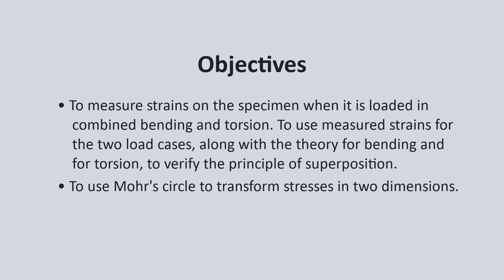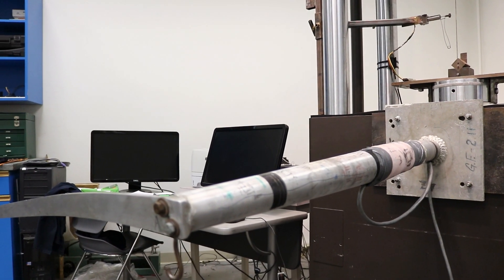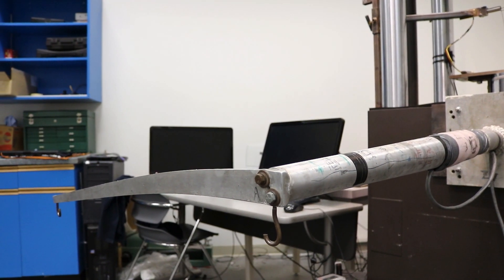And three, to use Mohr's circle to transform stresses in two dimensions. For this lab, we will move right on to the test procedure, which will consist of seven steps. The test procedure is as follows.